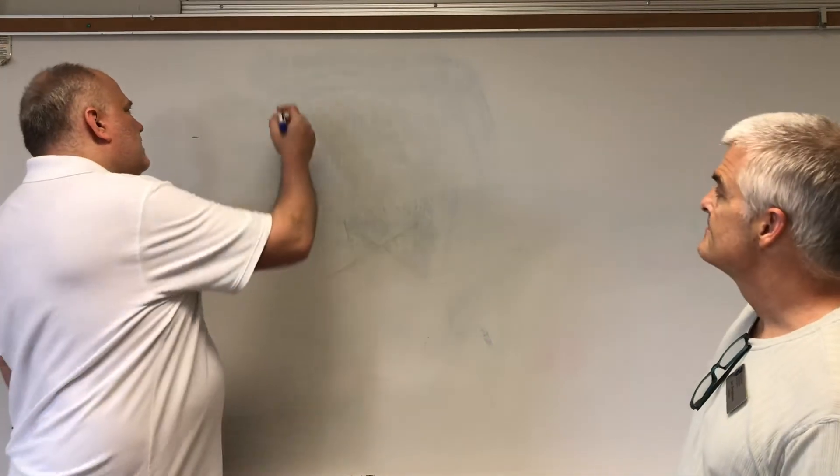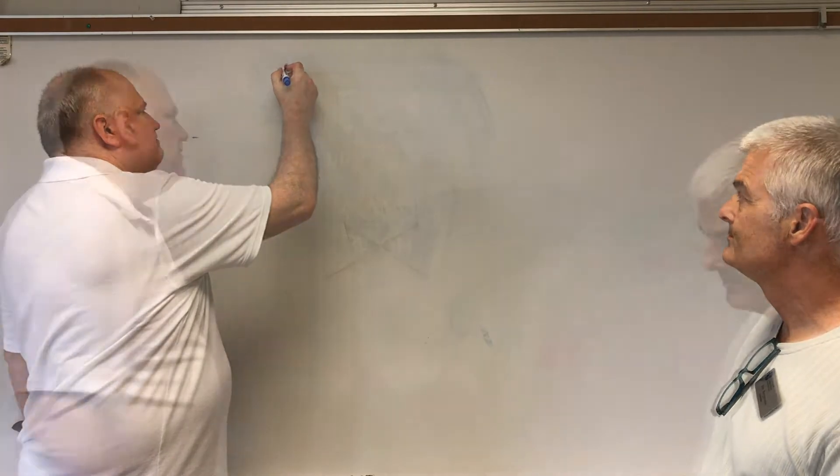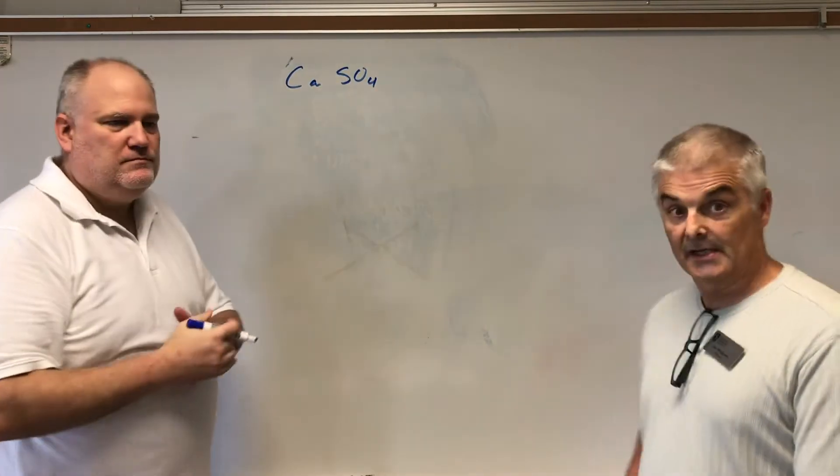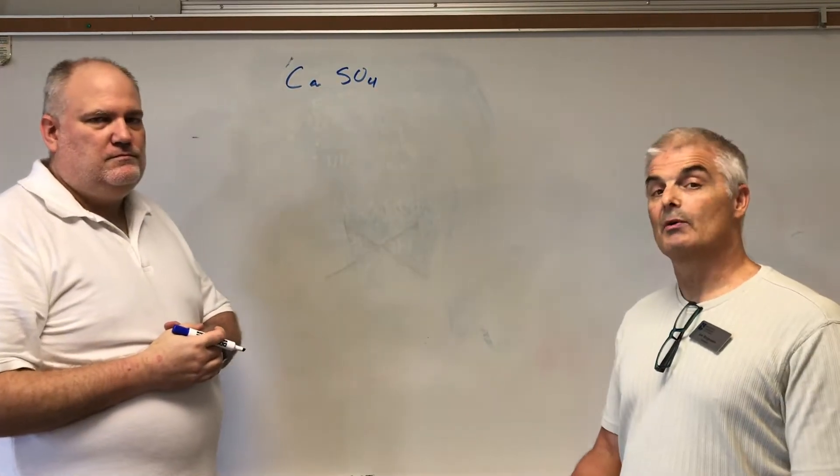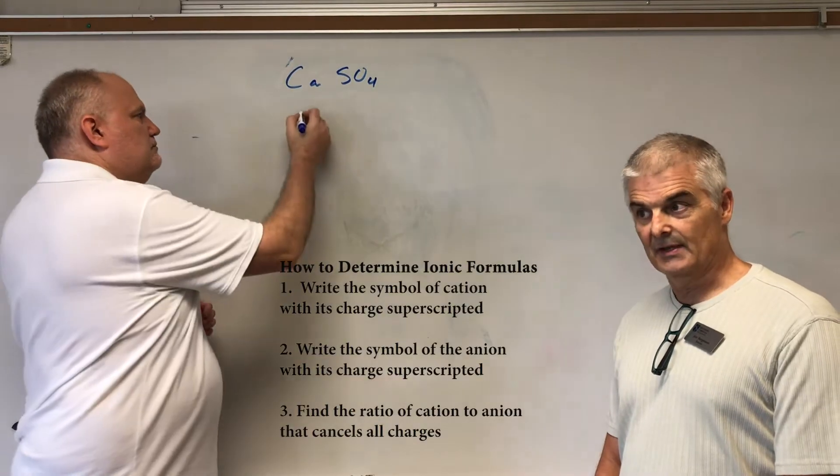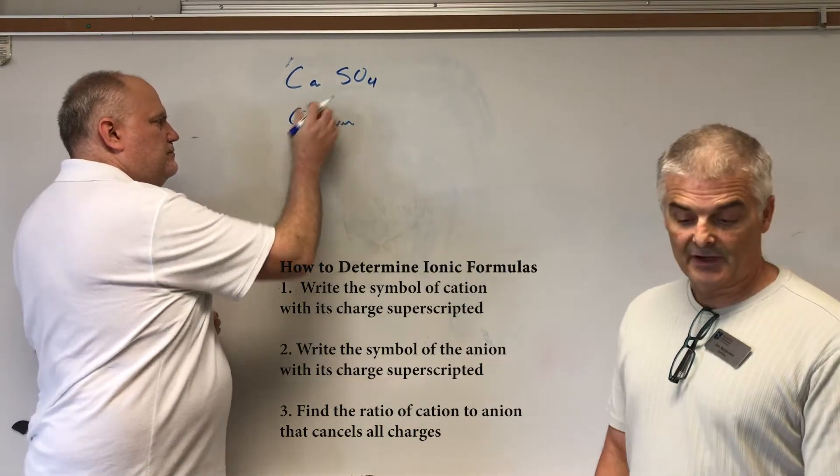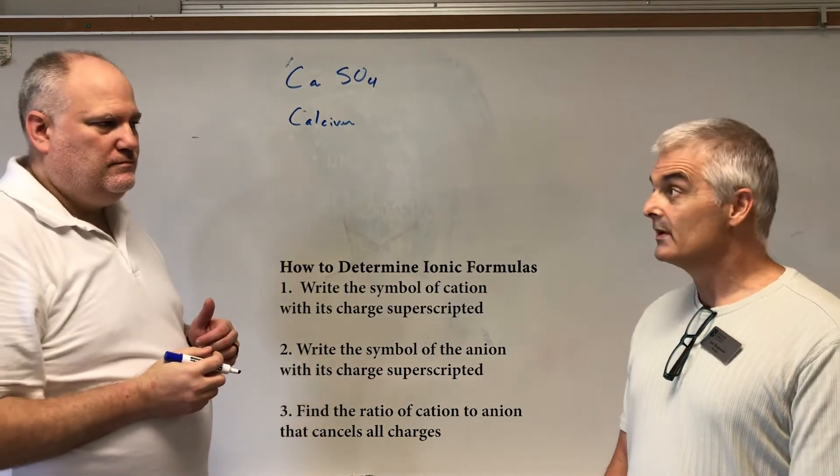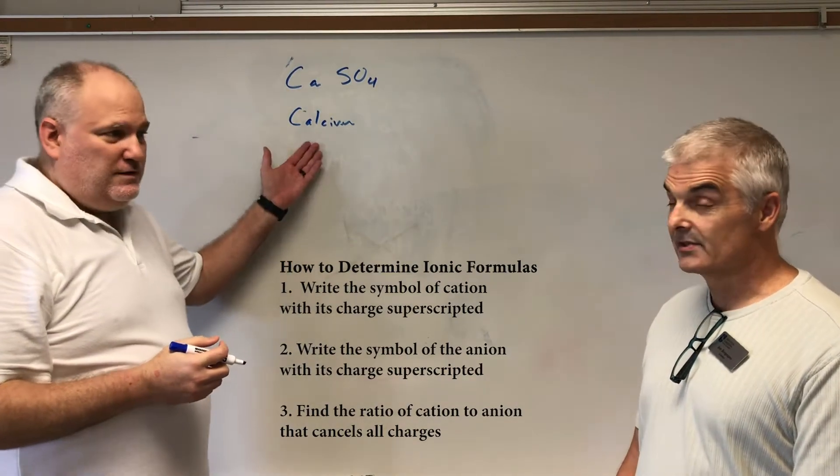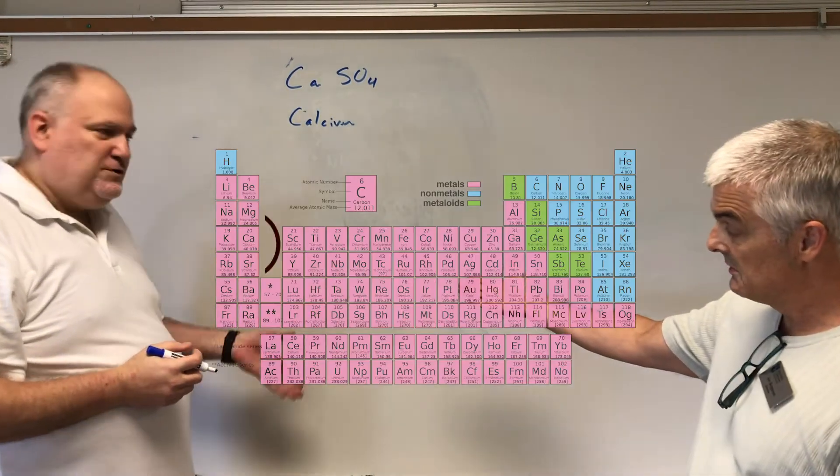Let's go with CaSO4. Remember the rule here: you always write down the anion first. Calcium, Ca, is calcium. Now we have to ask ourselves, do we need a Roman numeral? Calcium - look at the periodic table right here - group two. No, doesn't get one.